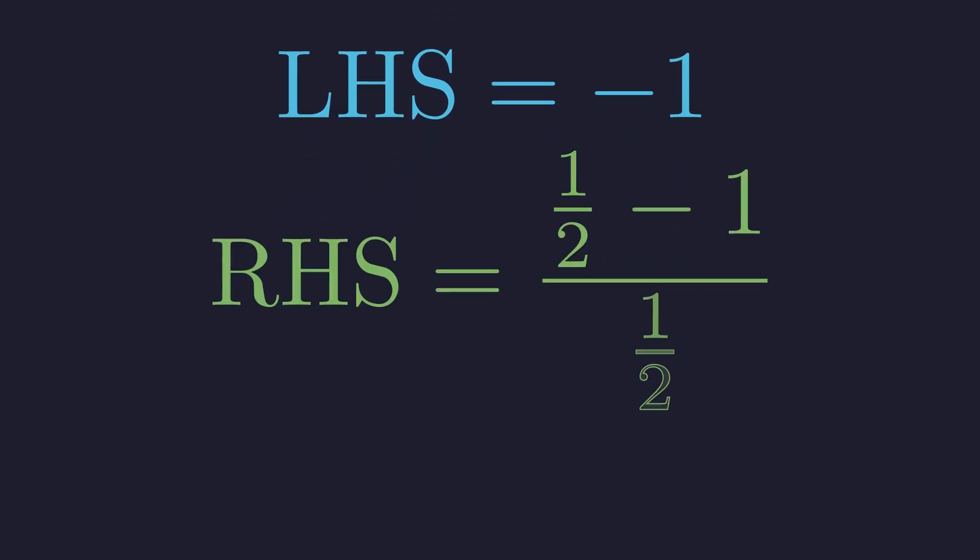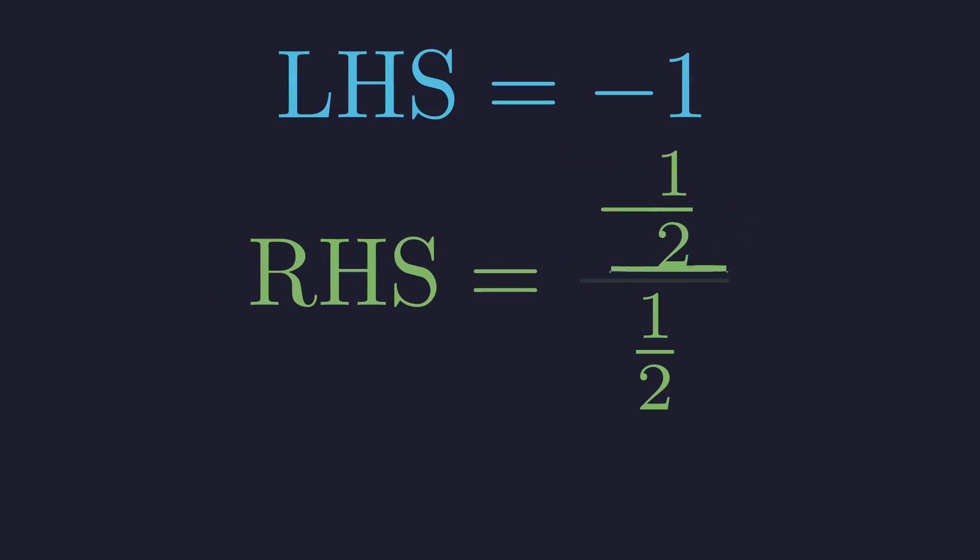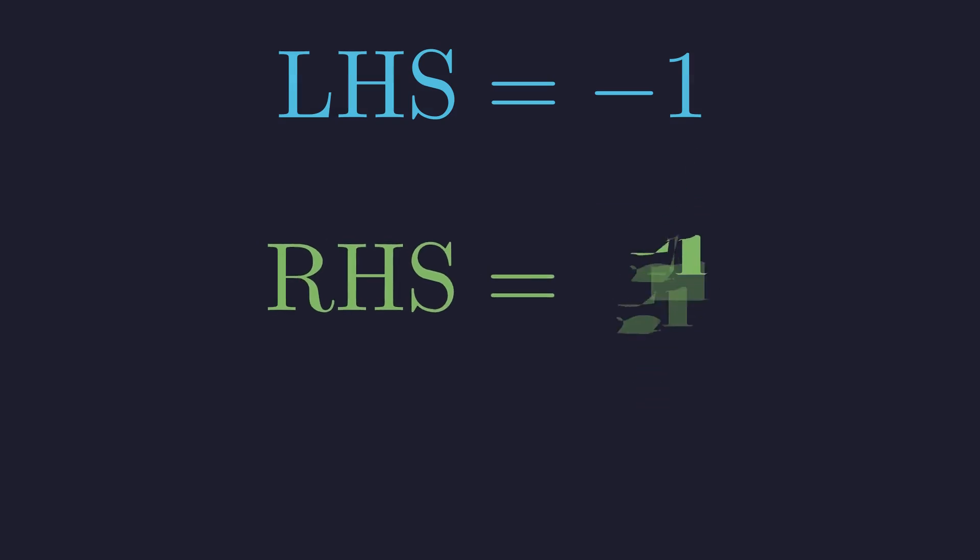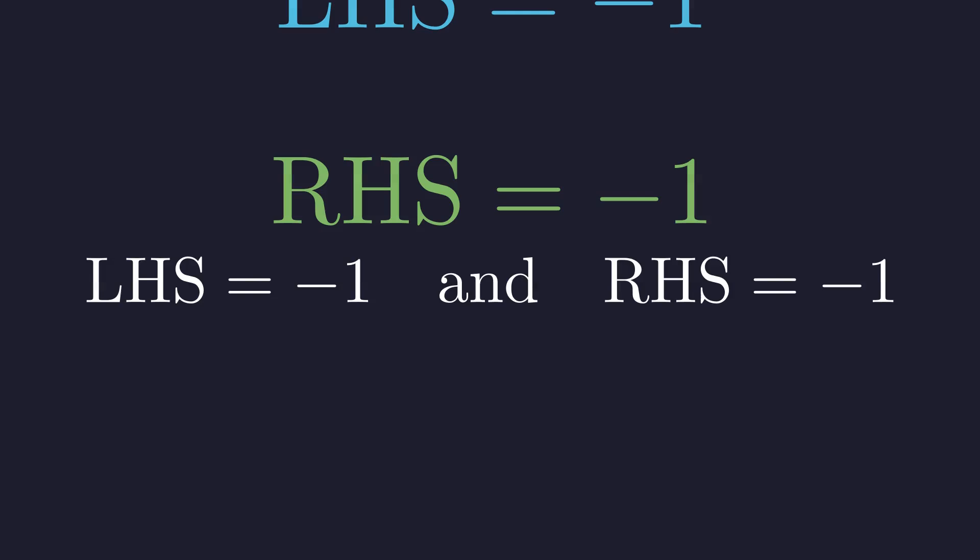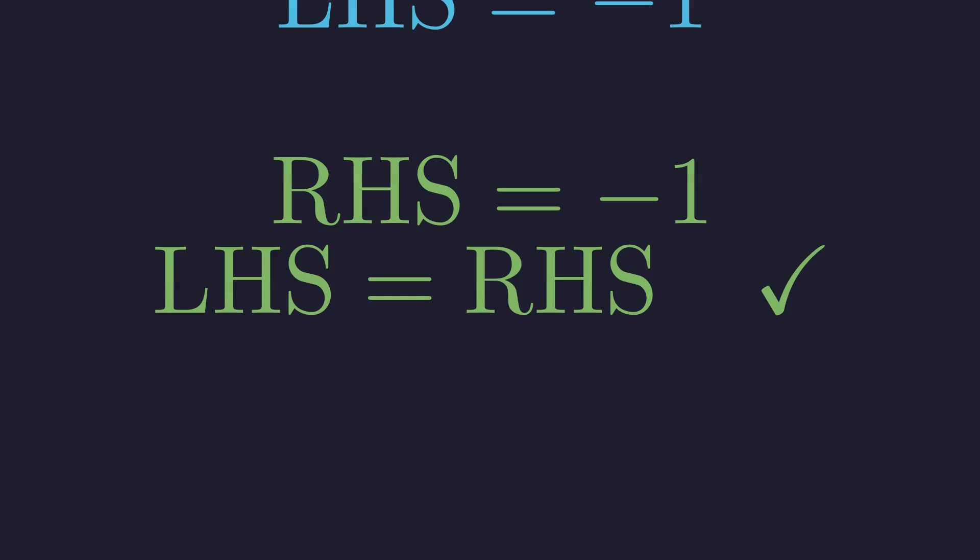Now for the right side, focusing on the numerator this time. We already know one half minus one gives negative one half. So we've got negative one half divided by one half, which again comes out to negative one. So the left side gives negative one, and the right side gives negative one. They match perfectly, so our solution checks out.